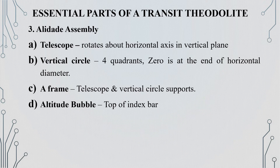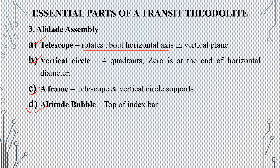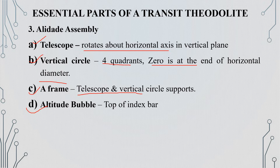The third classification of the essential parts of the transit is the alidade assembly. The alidade assembly has a telescope with a vertical circle, a frame, and an altitude level. The telescope has a vertical plane with a horizontal axis. The vertical circle has four quadrants. The frame of the telescope supports the vertical circle, and the third frame is the altitude level.